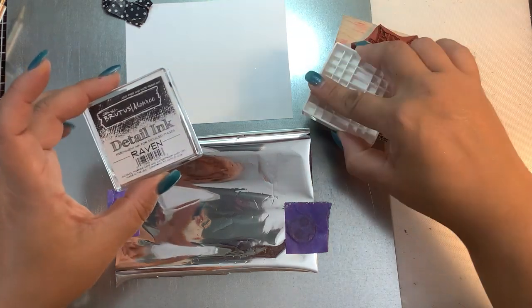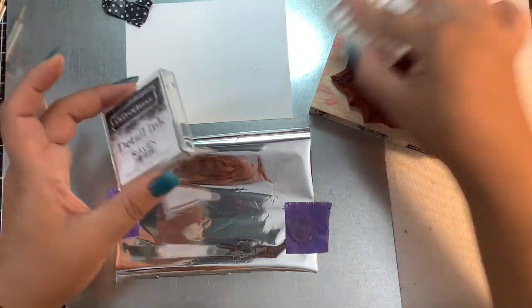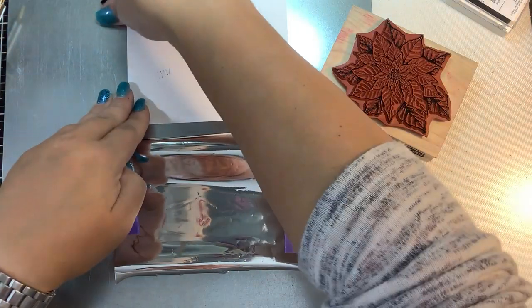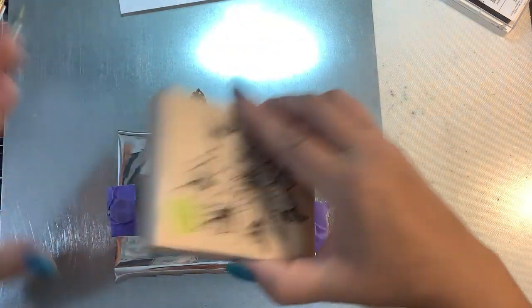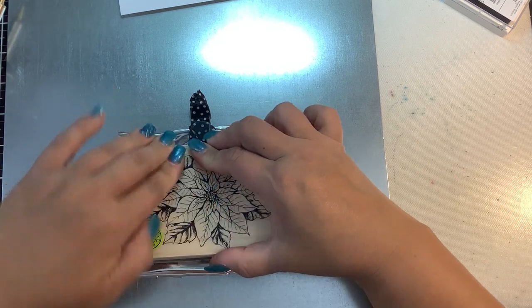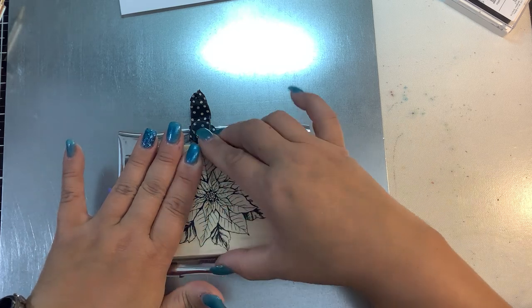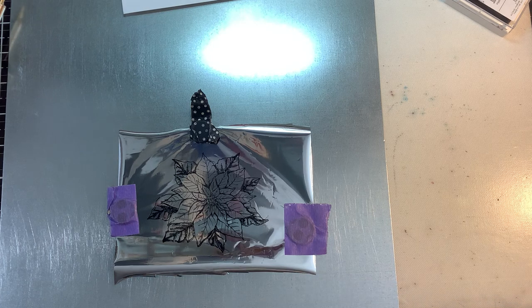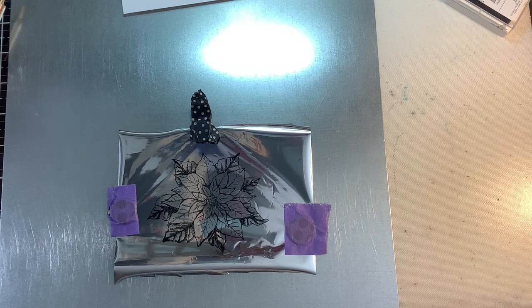So I am going to use some of this detailed ink from Brutus Monroe. This is a permanent ink because I'm going to be stamping on a slick surface here, which is this silver heat activated foil. Let me move this piece out of the way here. And I just want to stamp this image down onto, again, heat activated foil. It's going to give us an idea here. And you want that shiny side up. You want the matte side down.